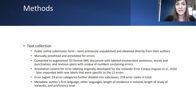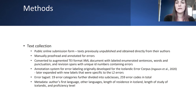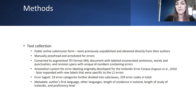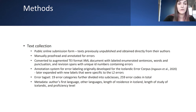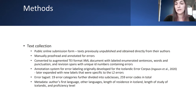We had a public online content submission form, and the texts were previously unpublished and uncorrected, mostly collected from the authors themselves — students of Icelandic as a second language at the University of Iceland. The annotation system and error codes were created originally for the Icelandic Error Corpus but were extended with error codes that only appear in L2. The texts include metadata such as the authors' first and other languages, length of residence in Iceland, length of study of Icelandic, and proficiency level on the CEFR scale.